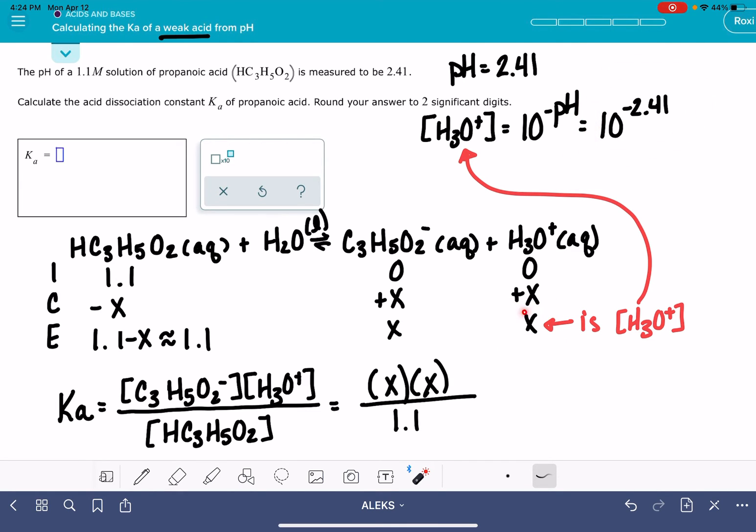Because X is equal to X, whatever this works out to be, it's going to be the same number for both of these. So we don't actually have to do the math on 10 to the negative 2.41 - our calculator can handle it like this. This is X, and that means we plug that into our equilibrium expression: 10 to the negative 2.41 squared. I'm just going to write it two times, 10 to the negative 2.41, and then divide that by 1.1. That is going to give us the Ka.